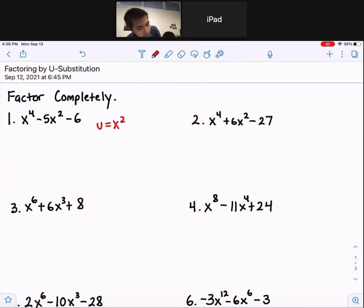So we're going to have u to the second power minus 5u minus 6. And then from here, we can do our lovely x method. So a times c is 1 times negative 6 for negative 6, and our b value is negative 5. The two numbers are negative 6 and 1.